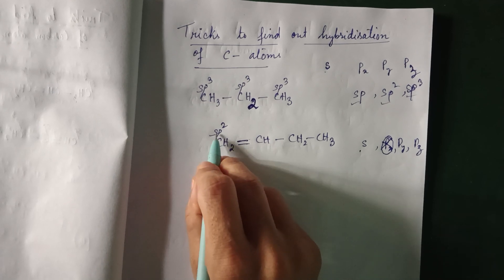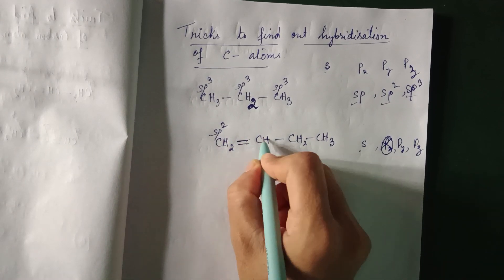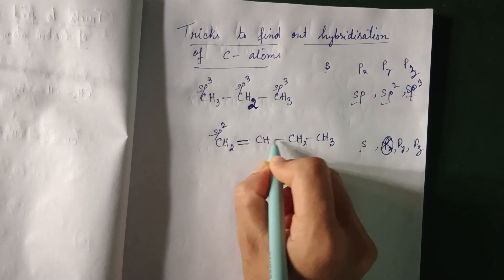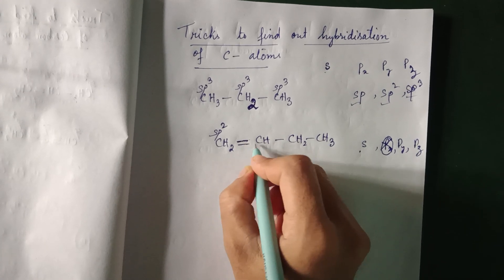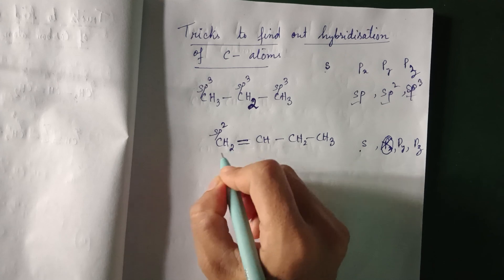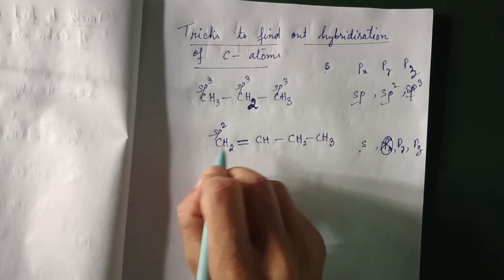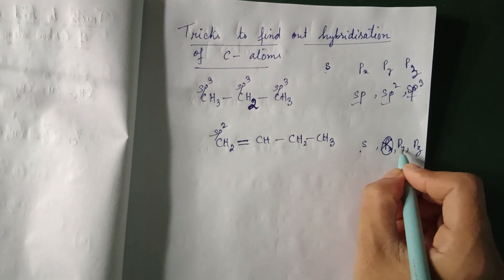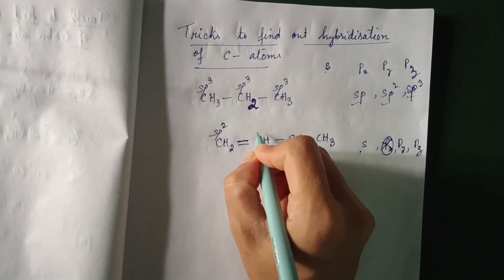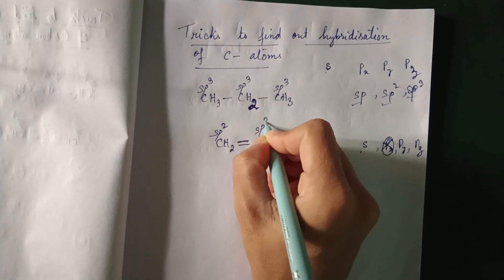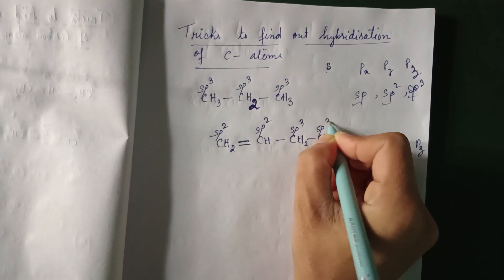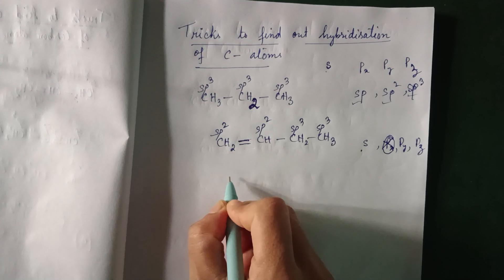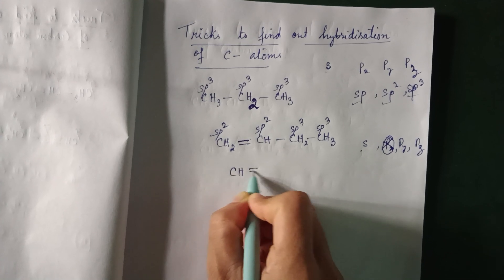This carbon is also double bonded, so we apply the same logic: one pi bond cancels one p orbital, leaving two p orbitals and one s orbital, giving sp2 hybridization. The remaining carbons with only single bonds are sp3.